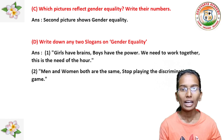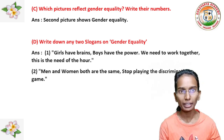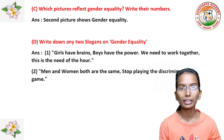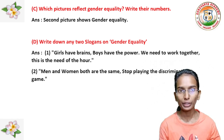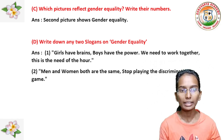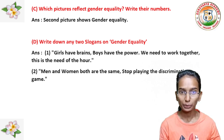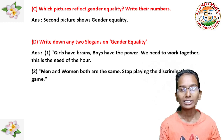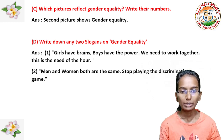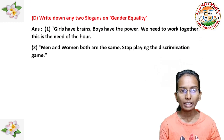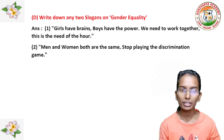Lastly, write down any two slogans on gender equality. We have to write slogans on gender equality. First slogan: Girls have brains, boys have the power — we need to work together. This is the need of the hour. Second slogan: Men and women both are the same — stop playing the discrimination game.